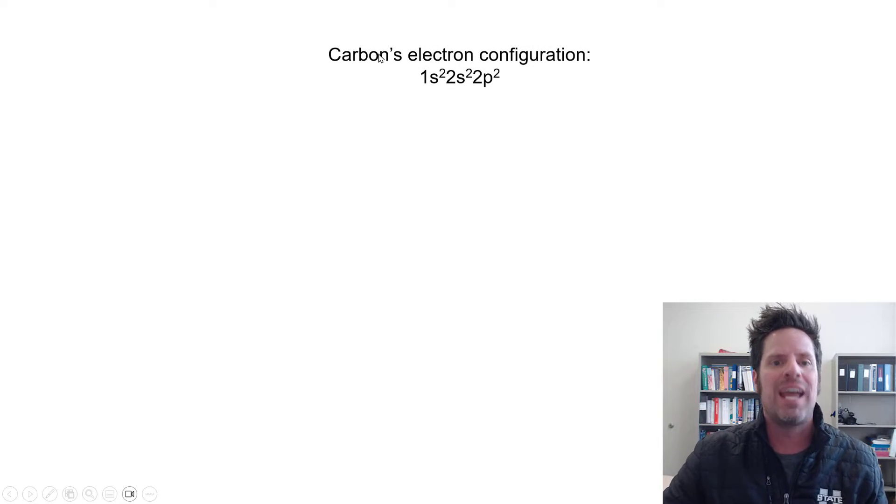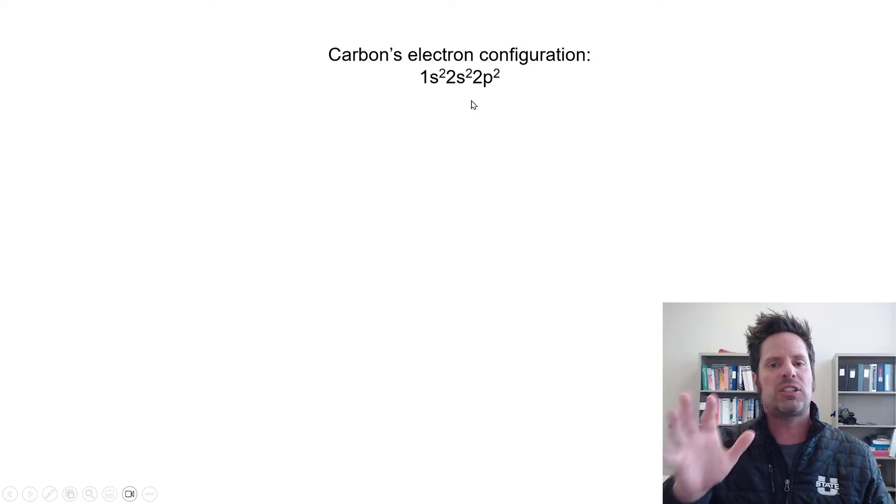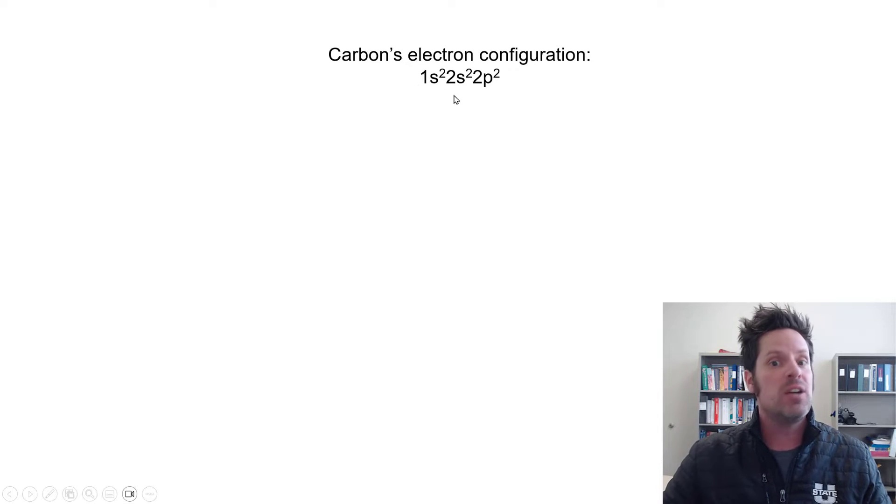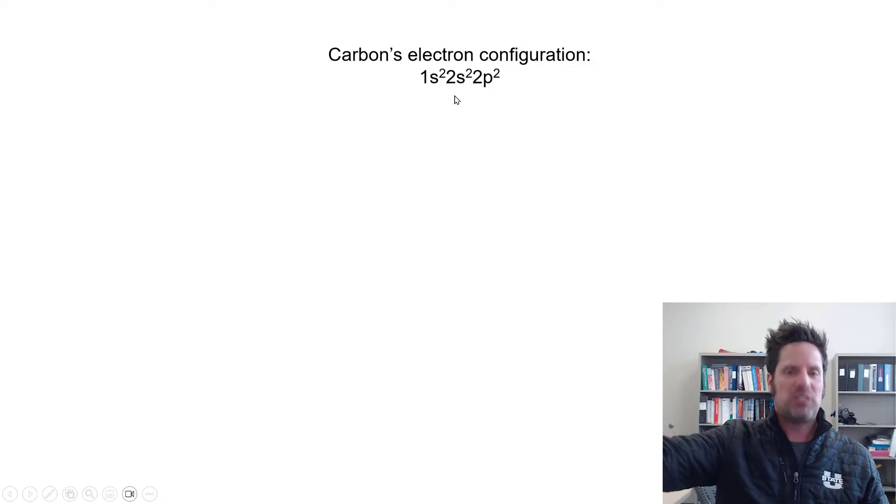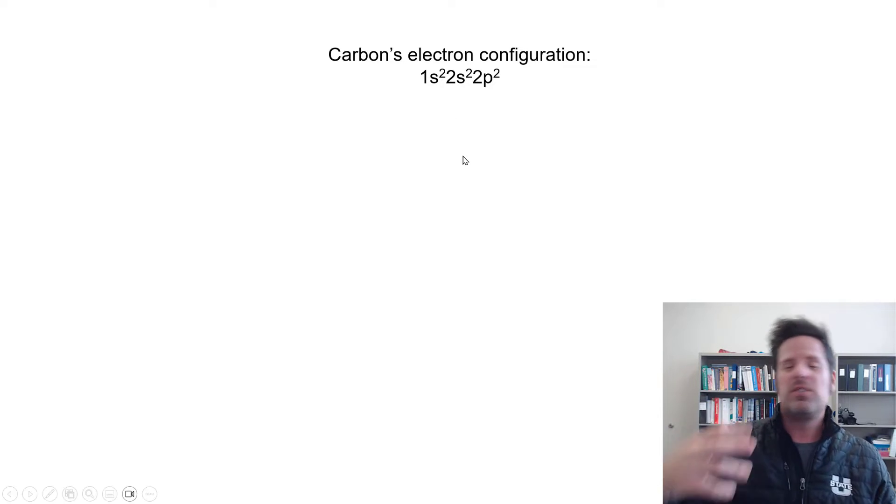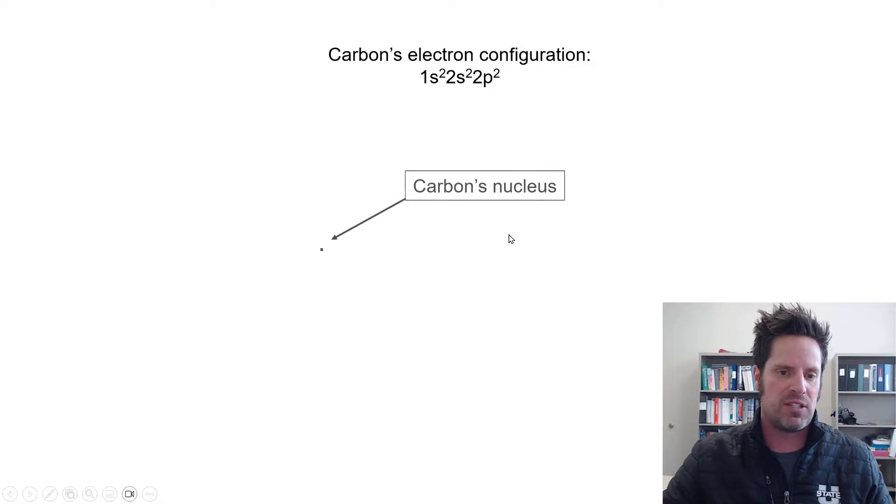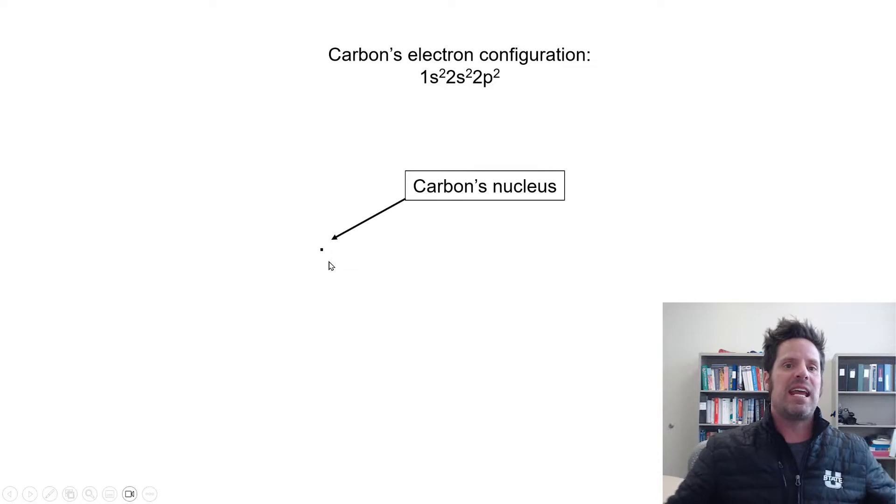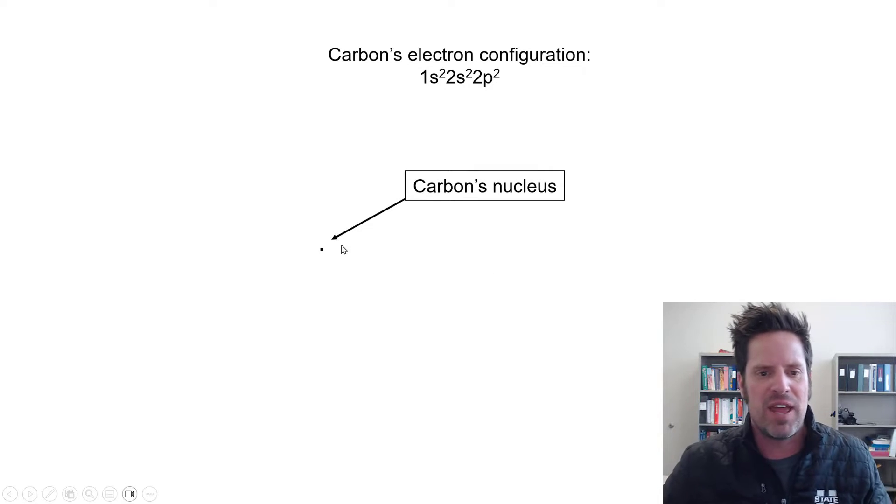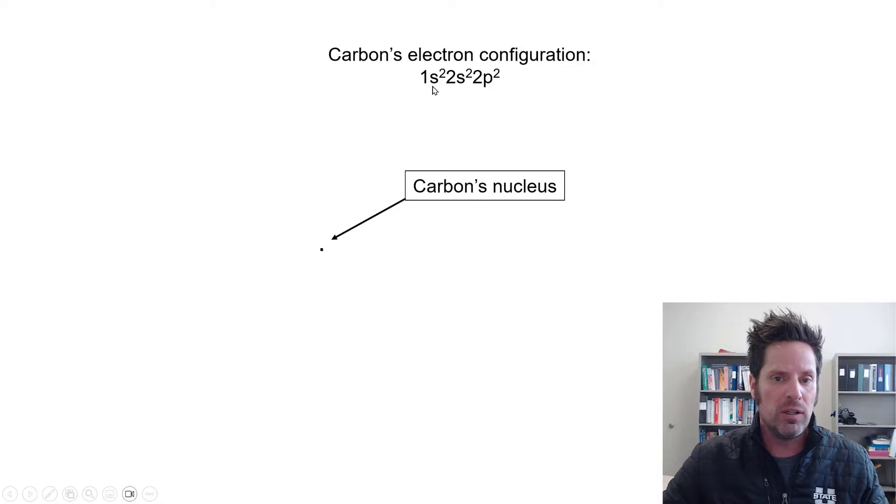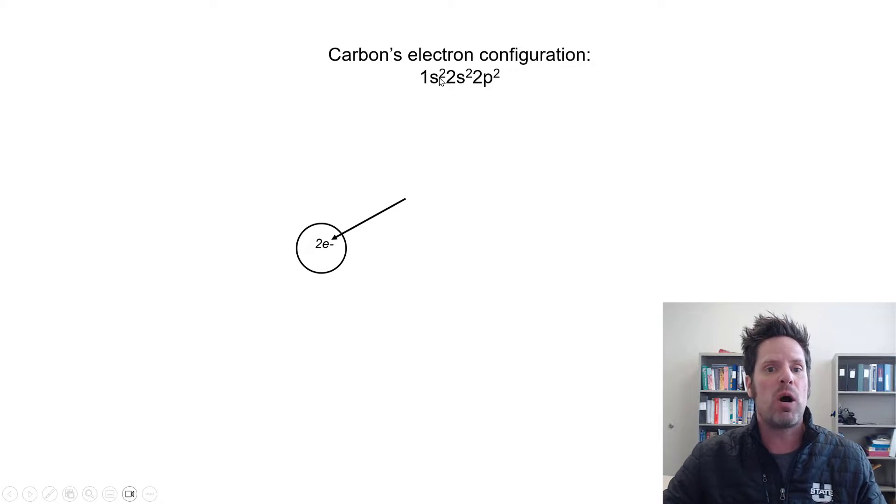Well, to consider that, I want to look at carbon's neutral electron configuration, which happens to be right here, 1s²2s²2p². To envision what this means, I'm going to build up a carbon atom all the way from its nucleus. The atom's nucleus contains its neutrons and protons, and we can imagine that being like this tiny little dot here. Surrounding that nucleus is a 1s orbital, which contains two electrons. That's indicated by the 1s² part of this configuration.